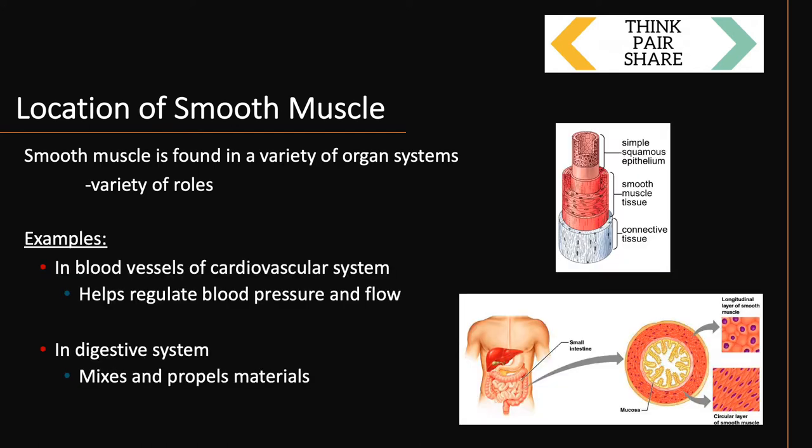The two we've mentioned more recently would be the cardiovascular system — the blood vessels have that layer, the tunica media, that smooth muscle layer that helps alter blood pressure and the distribution of flow of blood. And also within the digestive system, the stomach and the intestines, where smooth muscle helps to mix and propel material that we've ingested.